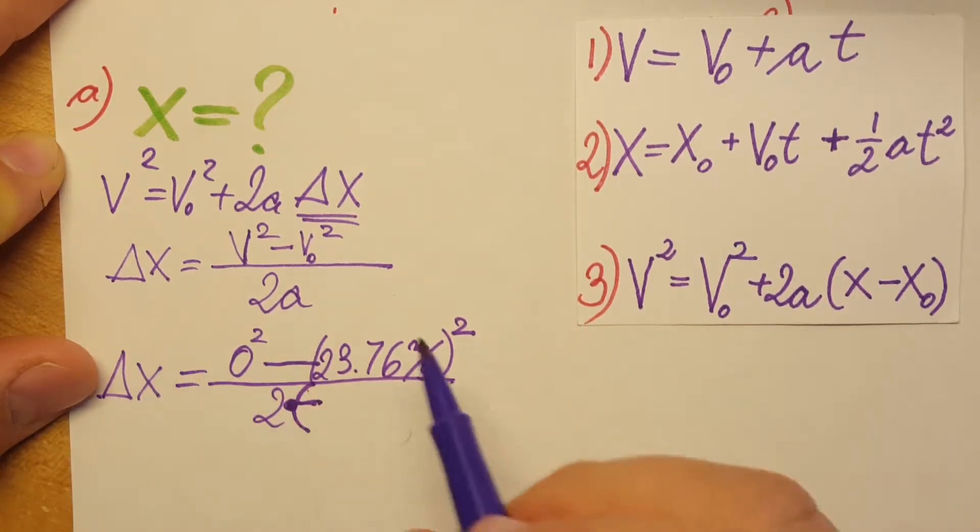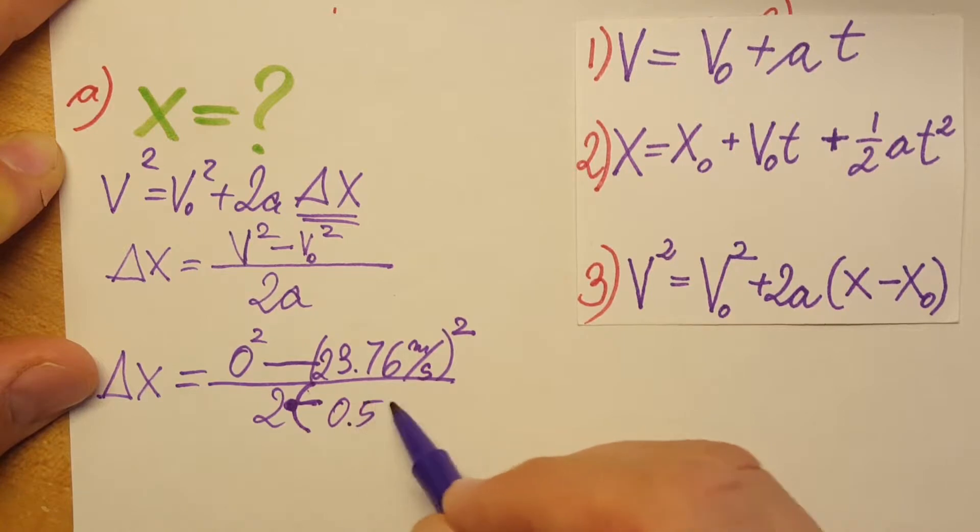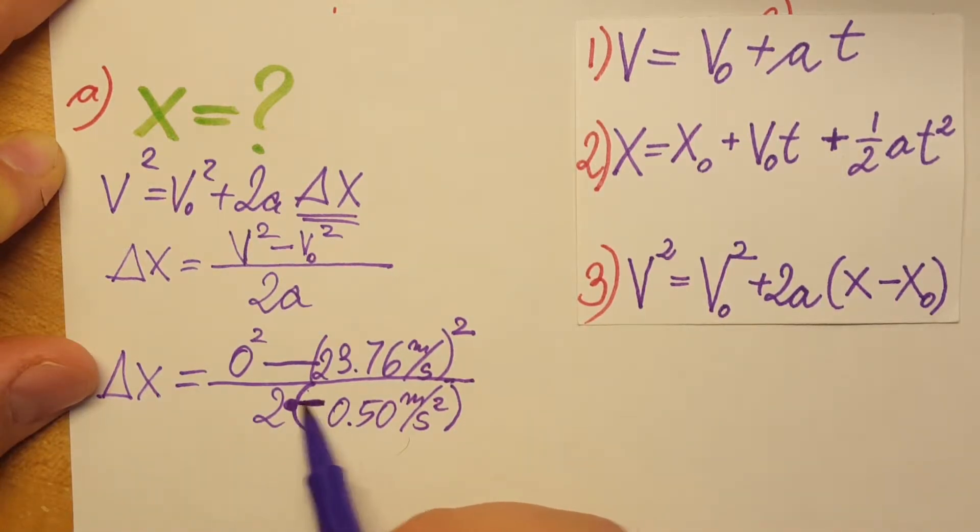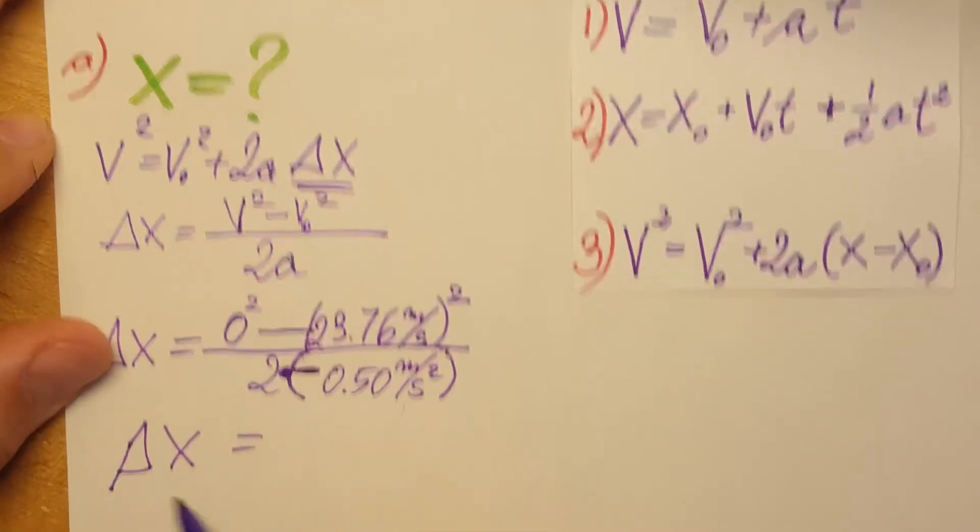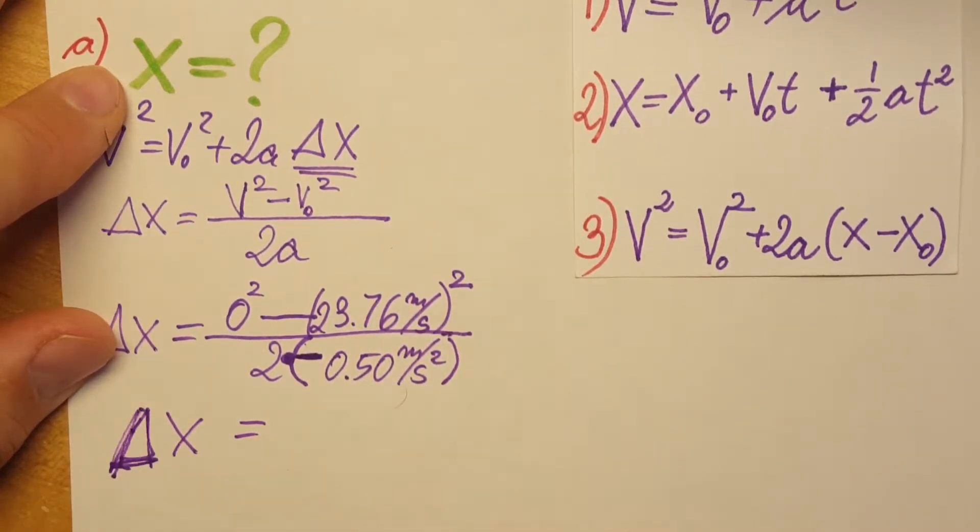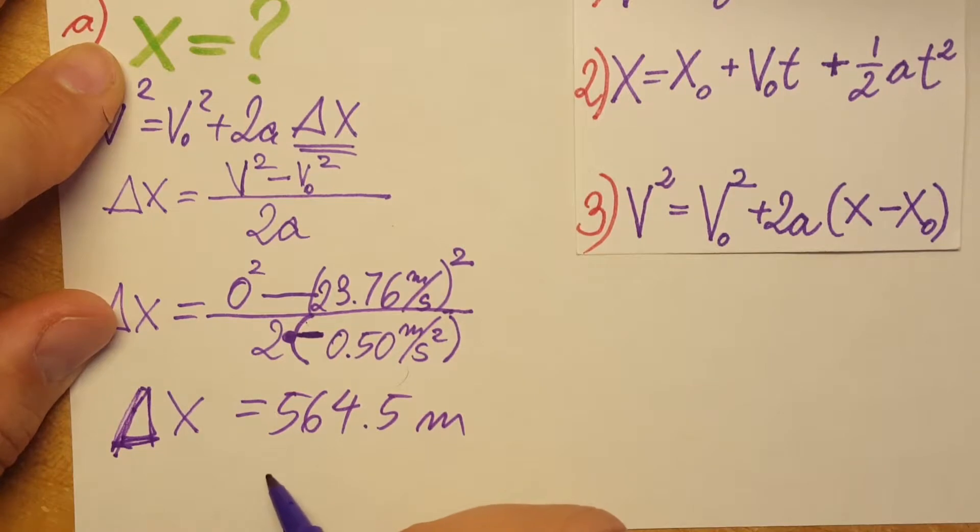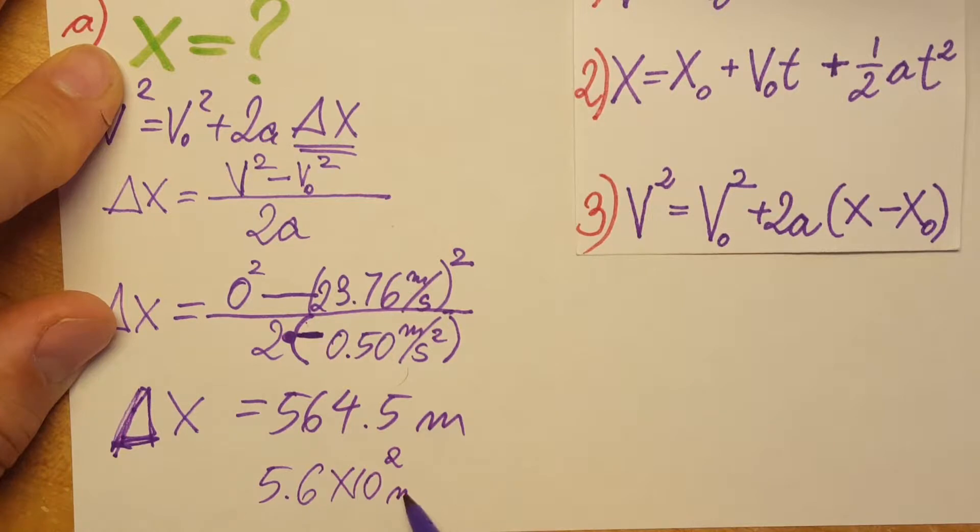The negative acceleration, which is 0.50 meters per second squared. Our acceleration is actually a deceleration since the car is slowing, so that's why we have a negative. With a calculator, delta x equals 564.5 meters, or in scientific notation, 5.6 times 10² meters.